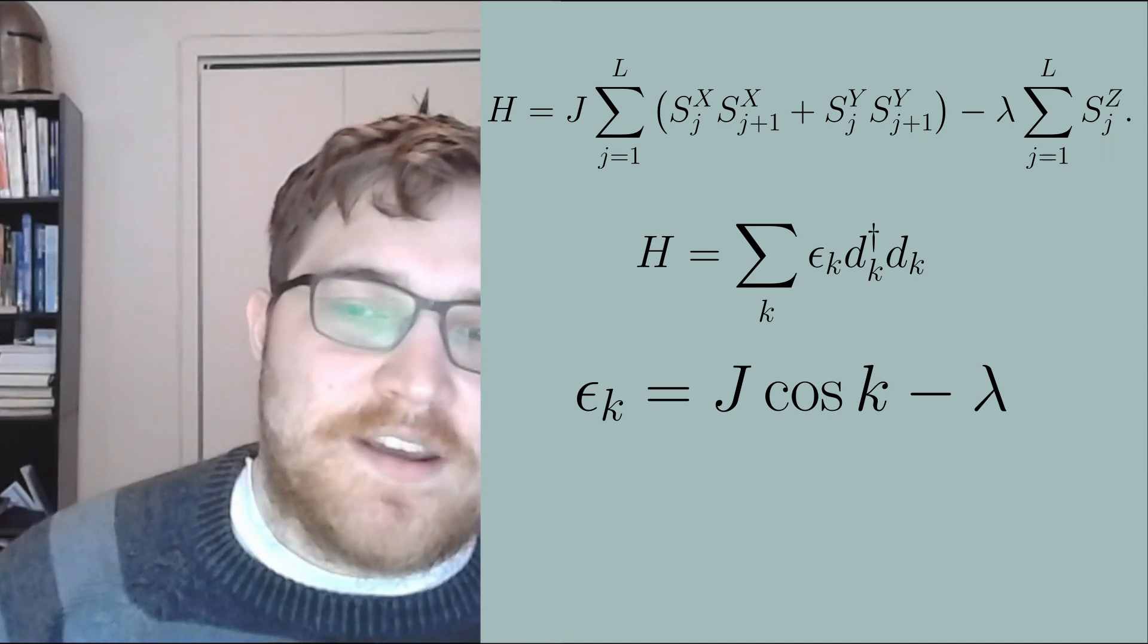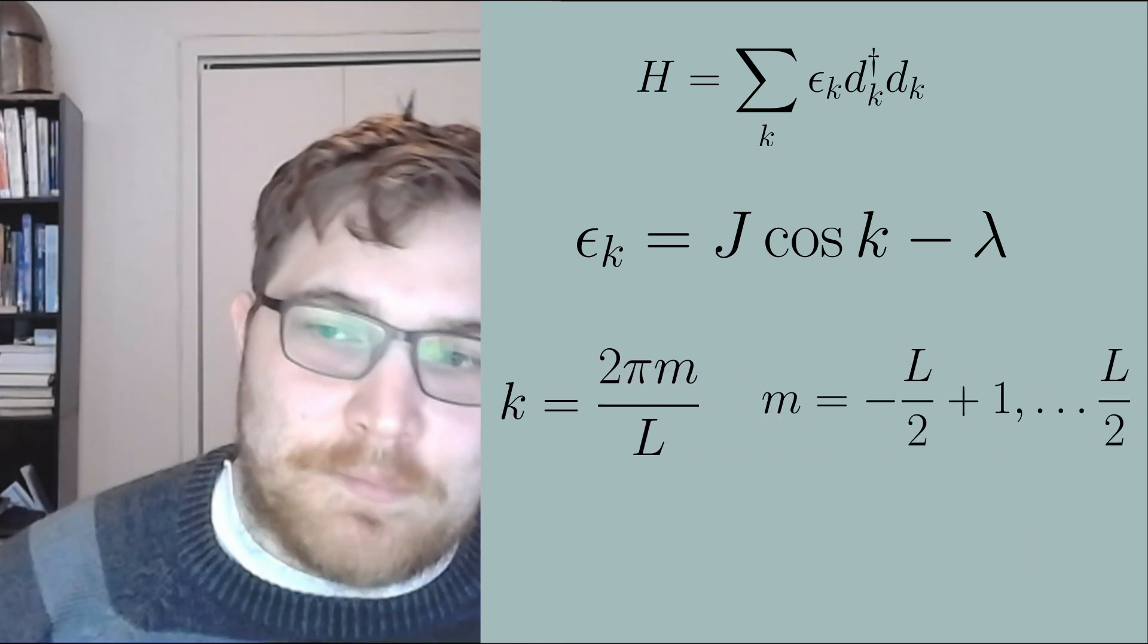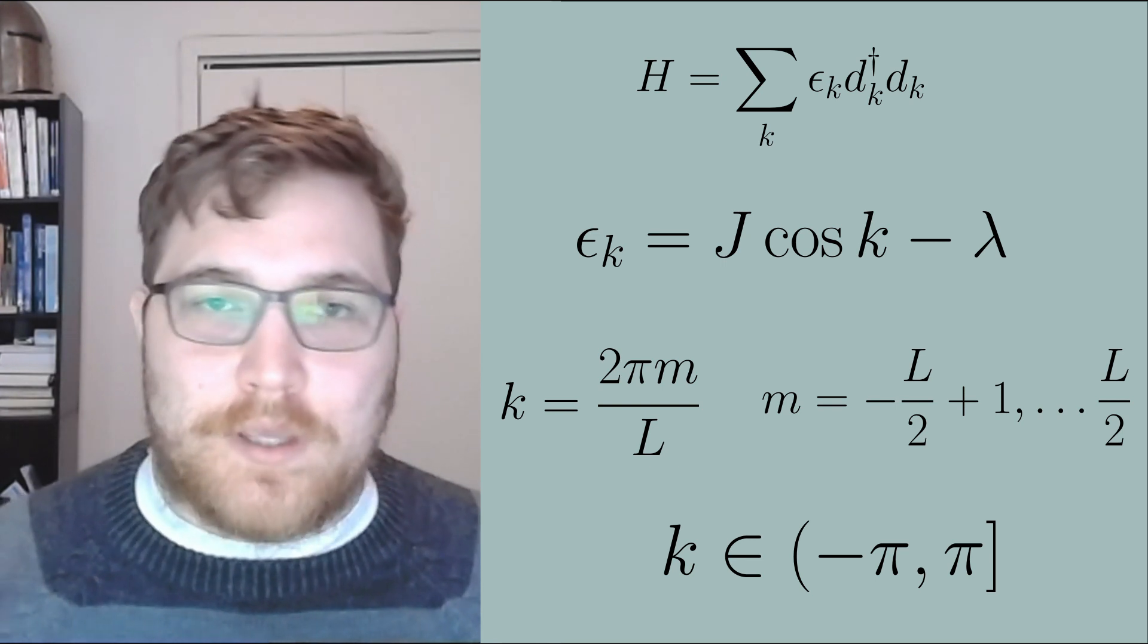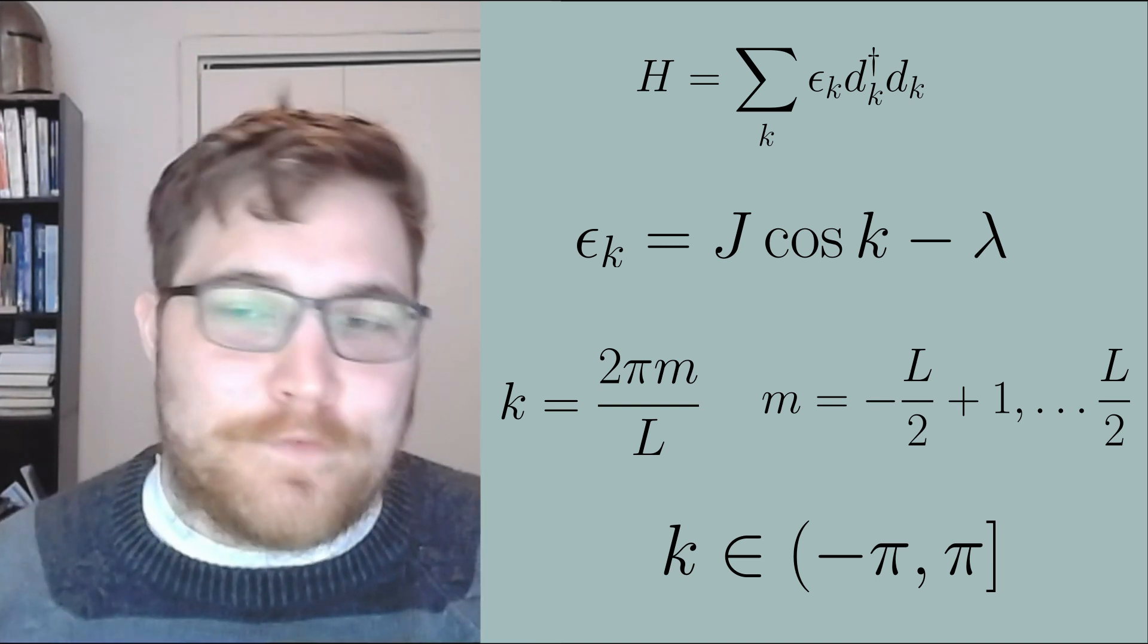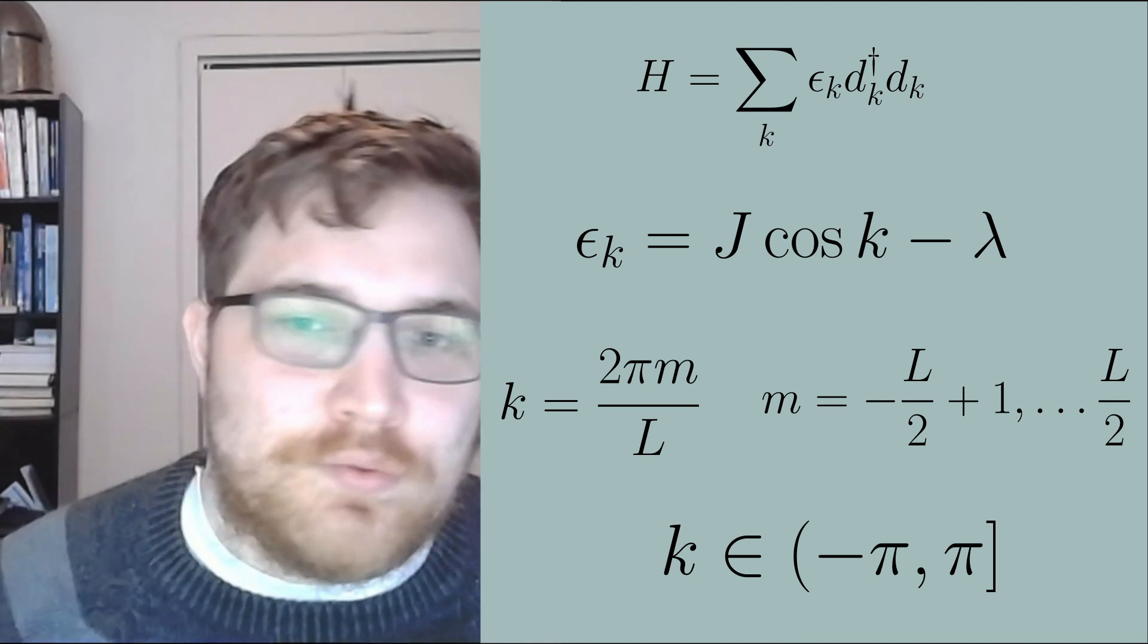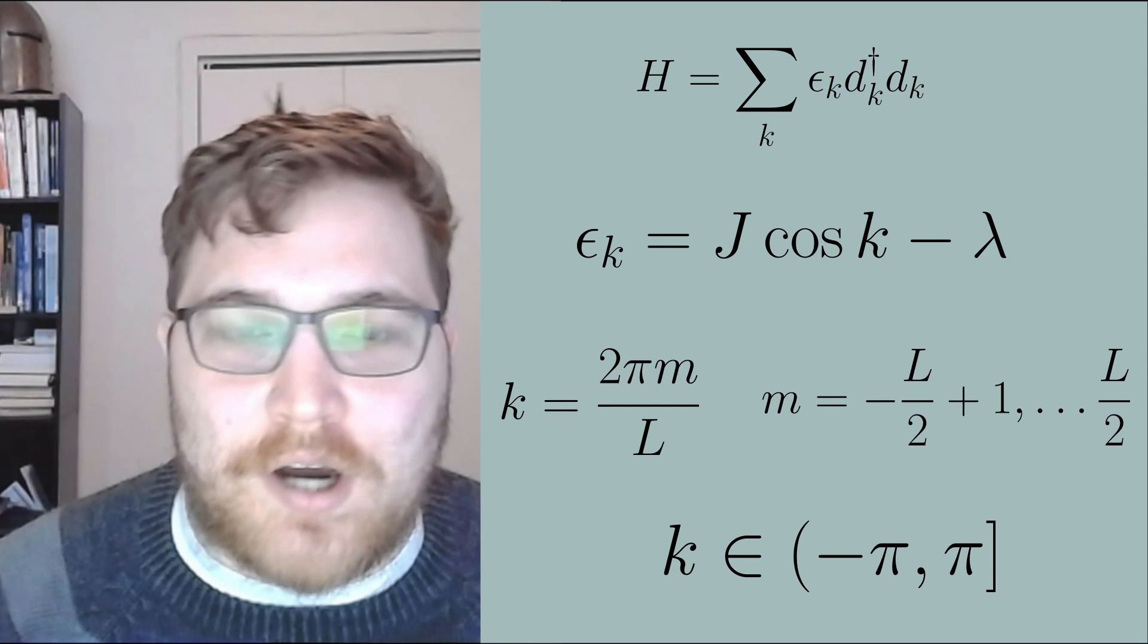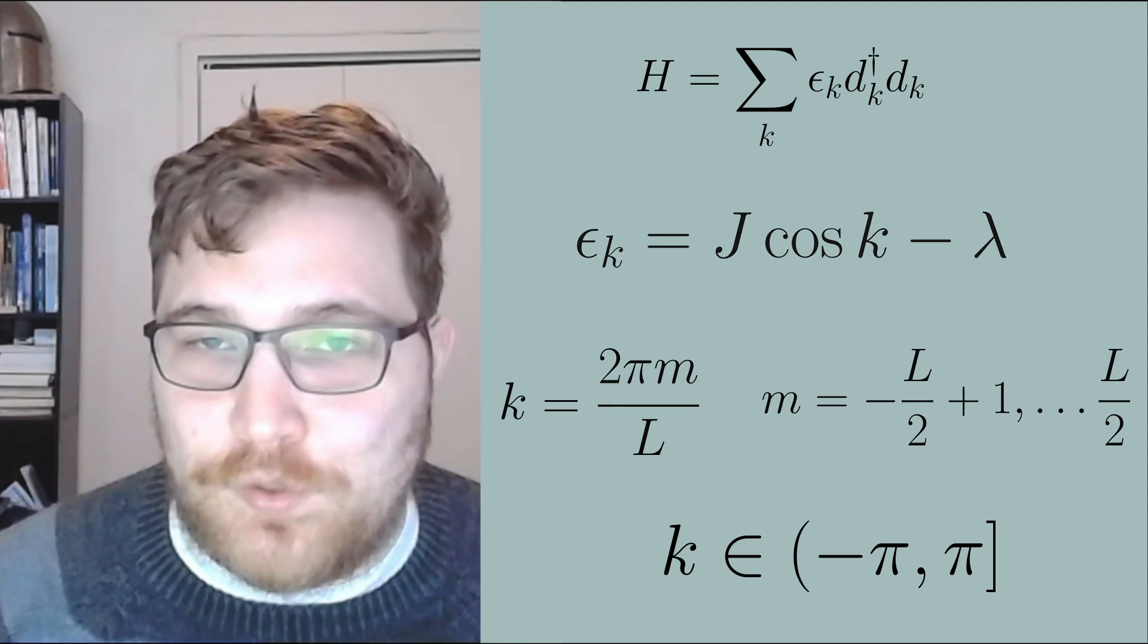In this video we will take the convention that the discrete momenta k are equal to 2 pi m divided by L such that k lies in the interval negative pi to pi, where the right hand side is inclusive and the left hand side is exclusive. This is a bit different than the first video but the representations of k are equivalent due to the complex exponential being periodic. This definition of k is more standard and this particular interval is commonly referred to as the first Brillouin zone, a concept we will definitely revisit in the future in more detail.